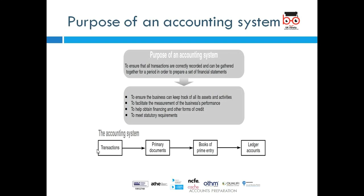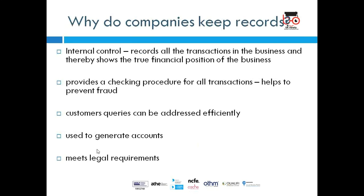When we have a transaction, we have primary documents and books of prime entry, and then we prepare the ledgers and then the trial balance. Companies keep records for internal control, which is very crucial for monitoring business performance, recording all transactions, and showing the true financial position. Keywords in financial accounting are 'true and fair.' For example, with credit sales, I must record the actual sales figure — I can't record 20 million when actual sales were 5 million.